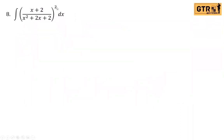The first step is to distribute the exponent to the numerator and denominator. For the denominator, we don't expand. For the numerator, just expand using the square of binomial.